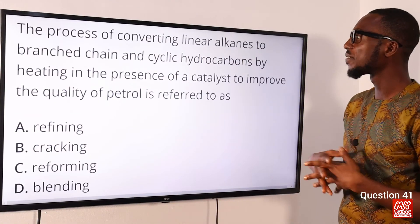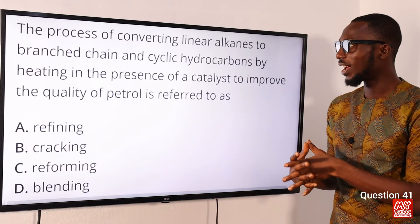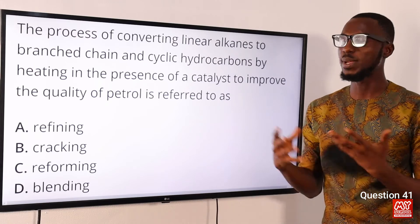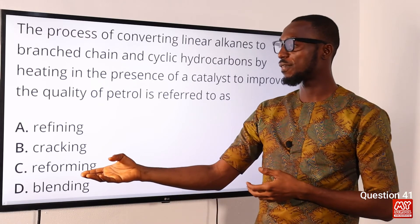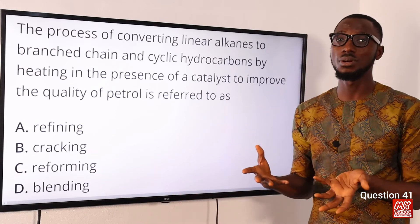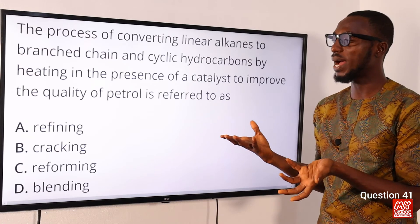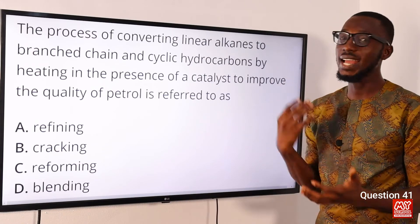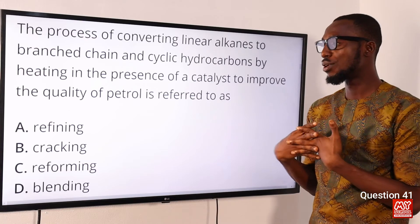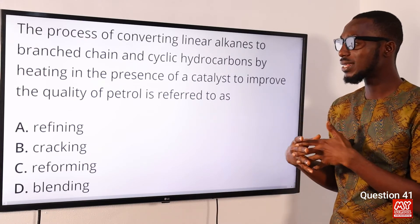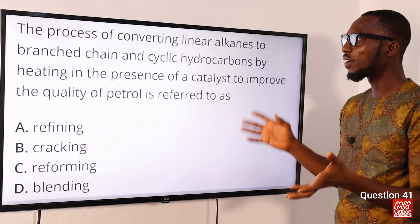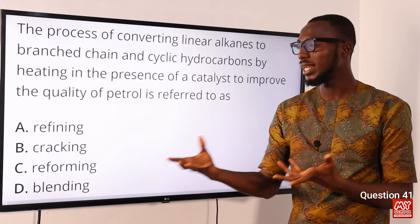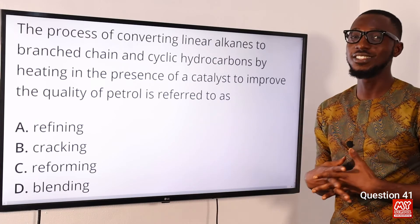Question 41: The process of converting linear alkanes to branched-chain and cyclic hydrocarbons by heating in the presence of a catalyst to improve the quality of petrol is referred to as catalytic reforming. It is an isomerization process aimed at increasing the octane number — the higher the octane number, the better the quality of petrol — and enhancing anti-knock activity. The correct option is option C.